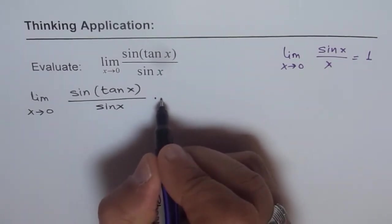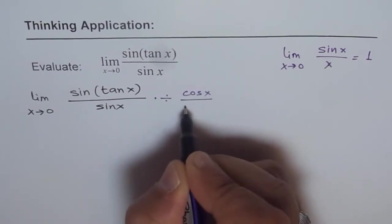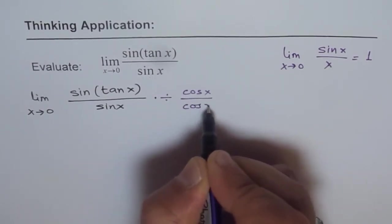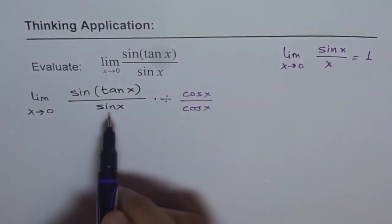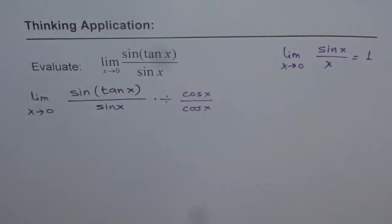do you get my point? That is, divide by cos x both numerator and denominator. Then sin x over cos x will be tan x, and that is the way we can do it.